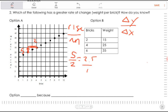When we're looking at option A, we're still looking at the change in weight over the change in bricks. From 15 to 25, we add 10 pounds. And from 2 to 4 bricks, we're adding 2 bricks. So for this one now, it's 10 pounds for every two bricks. And that's the same as 5 pounds for every one brick.